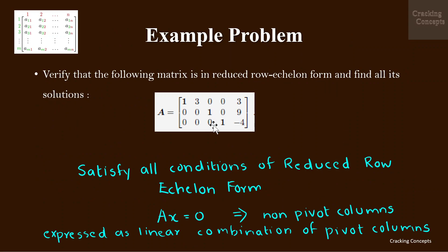Now we'll see an example problem where we have to verify whether the matrix given is in reduced row echelon form and find all its solutions. By examining the matrix it's clear that it is already in its simplest form, which is row echelon form. Also the pivot values are one and the pivot is the only non-zero element in the corresponding column, confirming that matrix A is in reduced row echelon form.